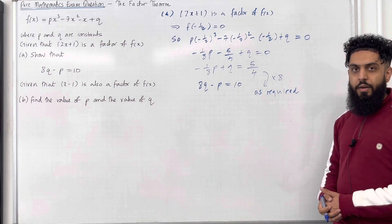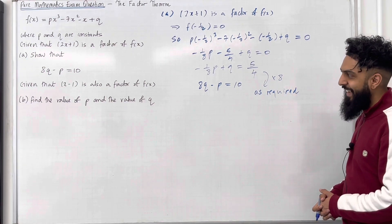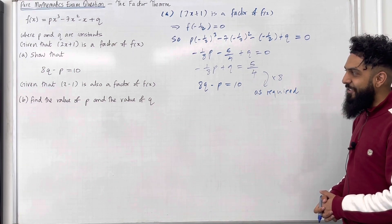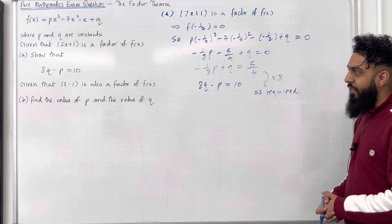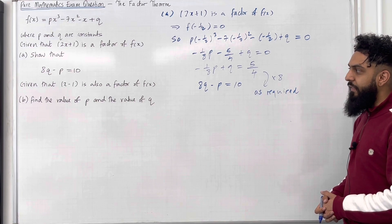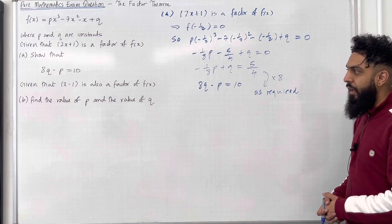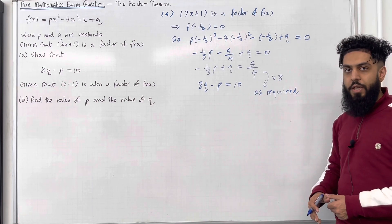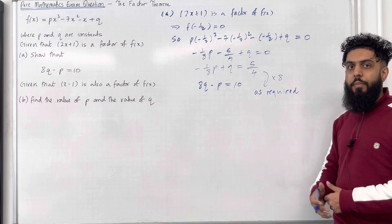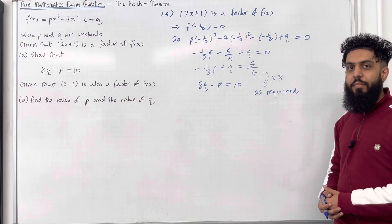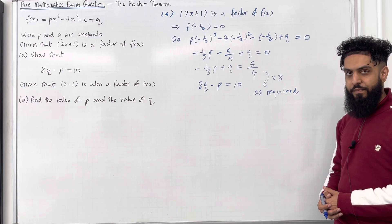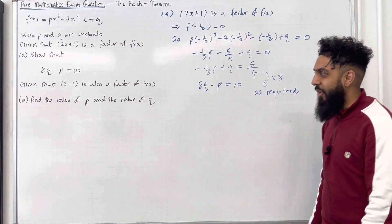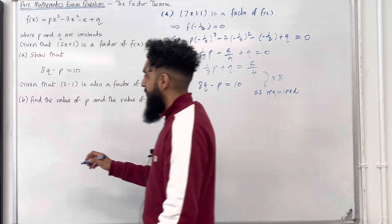Moving on to part b. Given that x minus 1 is also a factor of f of x, part b: find the value of p and the value of q. Please pause the video, have a go at part b, and once you've got your complete solution, then play the video.